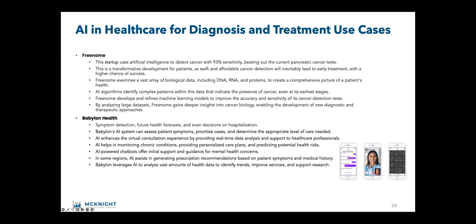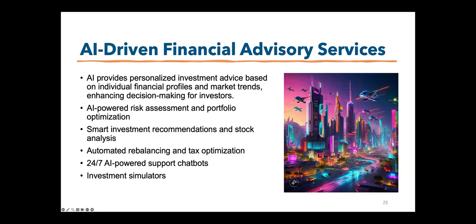Also, Flo — F-L-O, not the progressive lady — is a digital health companion. It's a popular health app primarily focused on pregnancy support, for women, and has become the go-to resource for millions of women worldwide. That's another example of an AI app in healthcare.